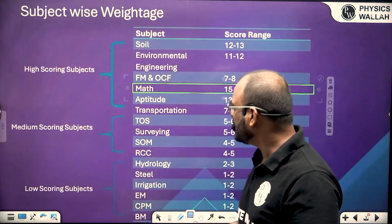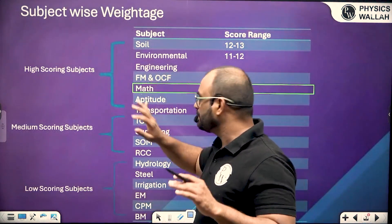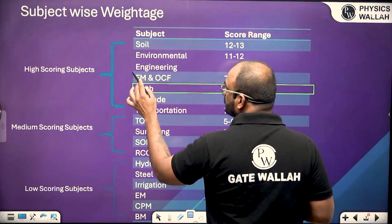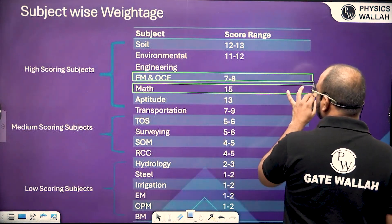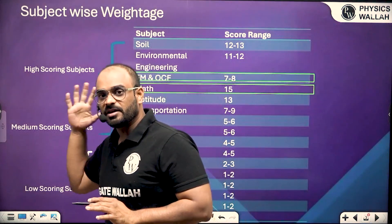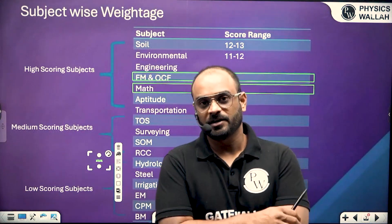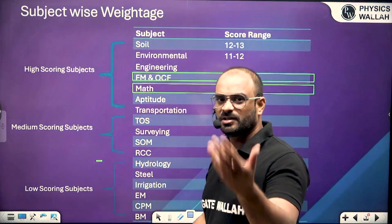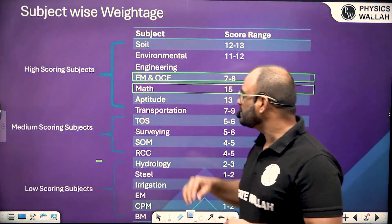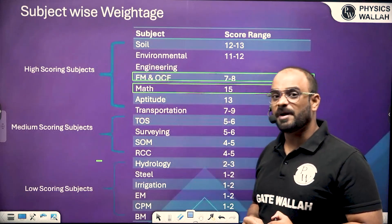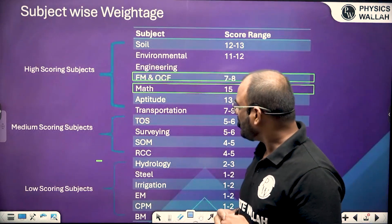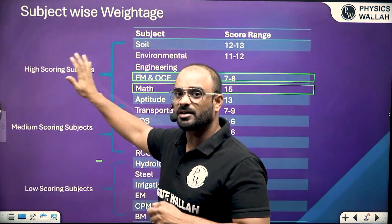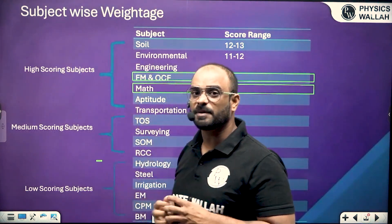But if you want to cover the syllabus from the fundamental or basic subject first, I recommend covering engineering mathematics first — its weightage is very high and its concepts are required in each and every subject of engineering. So try to cover the mathematics part first, then go with FM, because this is another fundamental subject in the high scoring category.